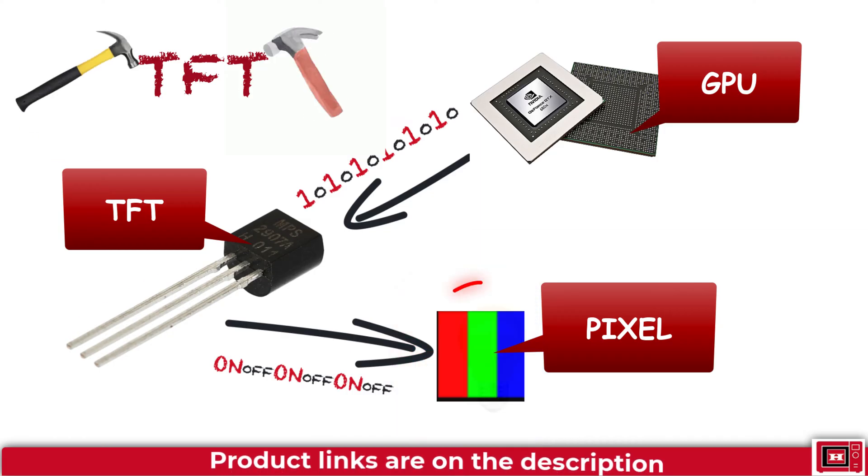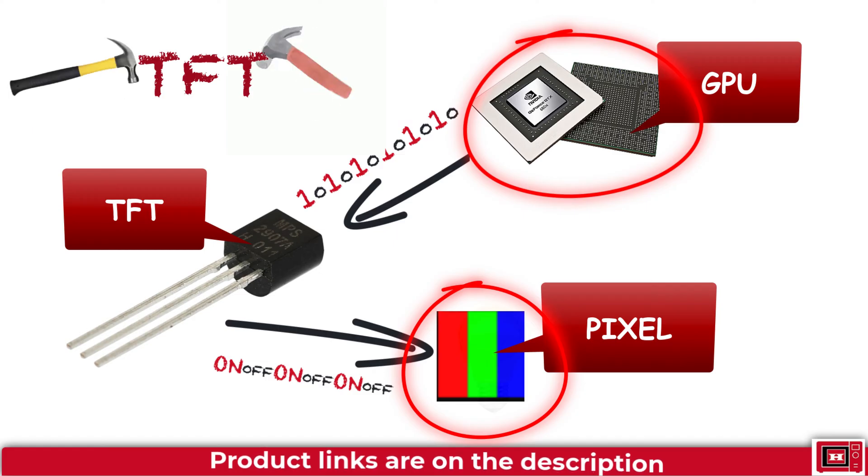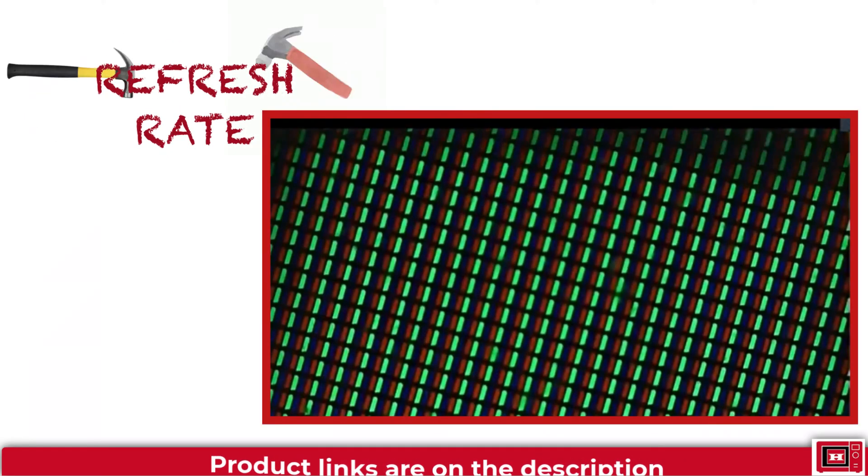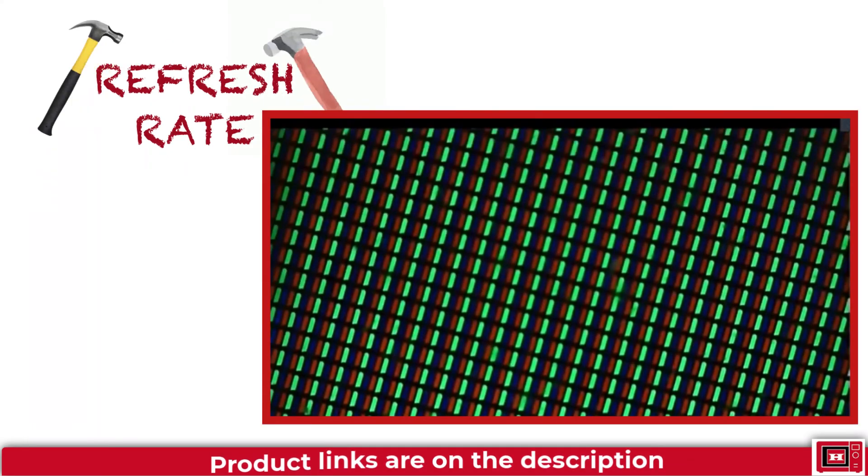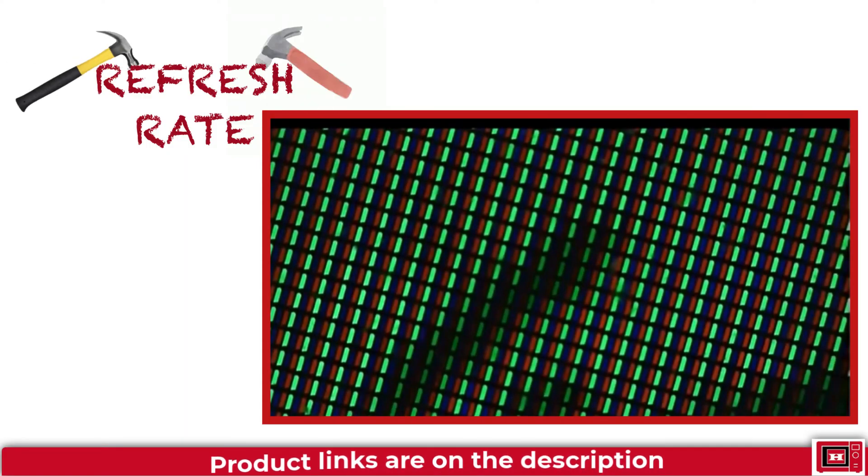This is why the display type and the kind of graphic processor a TV, tablet or smartphone has would greatly affect the refresh rate of that device. Refresh rate is just another technical jargon describing how fast these pixels can go on and off. And the TFT is what does the switching.